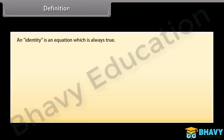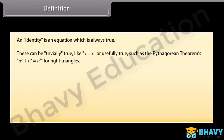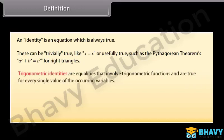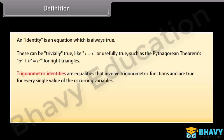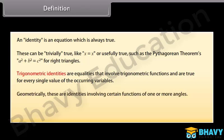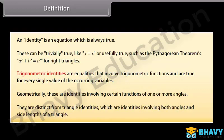Definition: An identity is an equation which is always true. These can be trivially true, like x is equal to x, or usefully true, such as the Pythagorean theorem: A squared plus B squared is equal to C squared, for right triangles. Trigonometric identities are equalities that involve trigonometric functions and are true for every single value of the occurring variables. Geometrically, these are identities involving certain functions of one or more angles. They are distinct from triangle identities, which involve both angles and side lengths of a triangle.